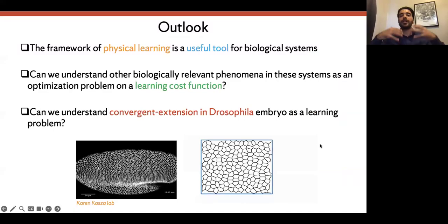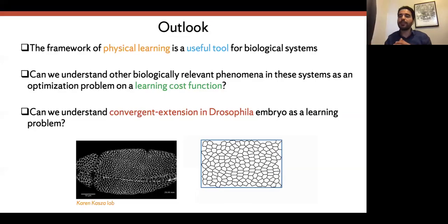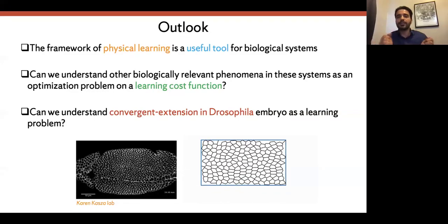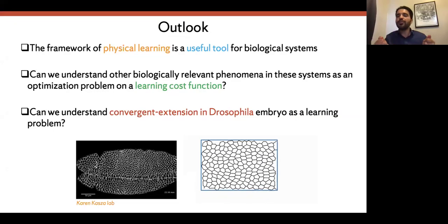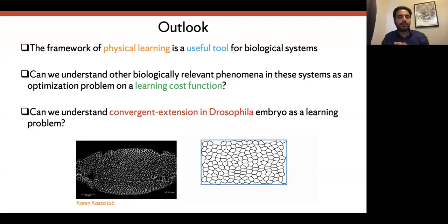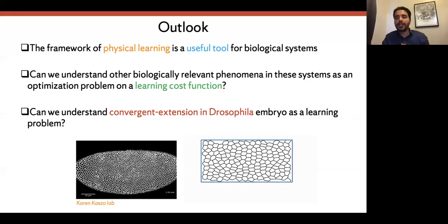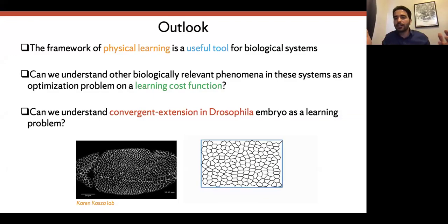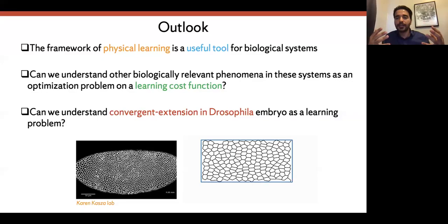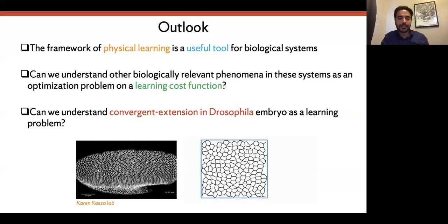Going back to my original introduction: I talked about the framework of physical learning that people use to train and apply learning ideas in physical systems. I think this is a useful tool for biological systems, because that's exactly what biology does. But there are open questions: if you want to study this in a complex biological system, you need to identify what the learning cost function is and what the learning degrees of freedom are. Those are system-specific questions.